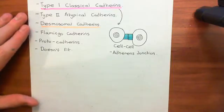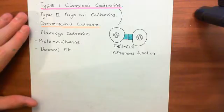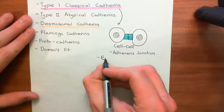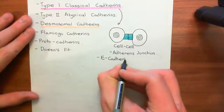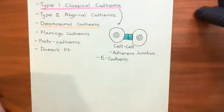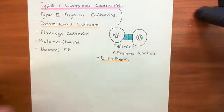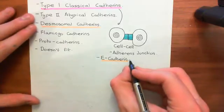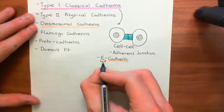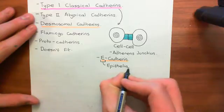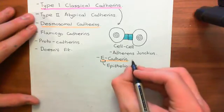The famous examples of type 1 classical catherines are the ones that people have generally heard of. The most famous example is E-catherin itself, which has received enormous attention because of its involvement in cancer — carcinomas. The E tells you where it's present: it's mainly present within epithelia. This is the catherin you find a lot of in epithelial cells.